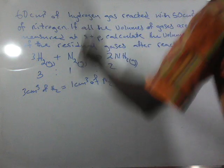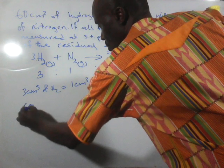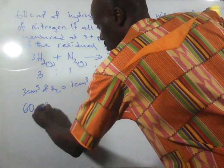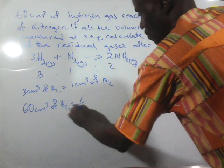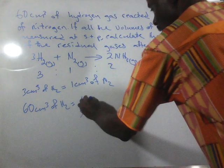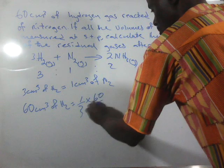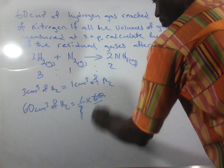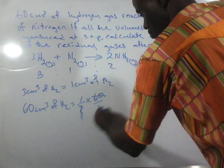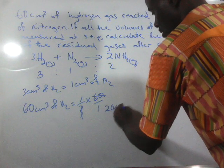Since we have 60 cm³ of hydrogen, it will then be 1/3 × 60/1. If 3 cancels out, we notice that what we have here is 20 cm³. That is the volume of nitrogen that will react.